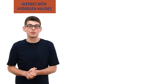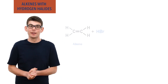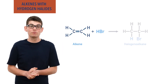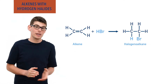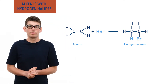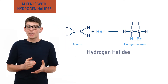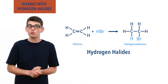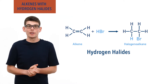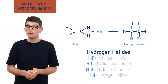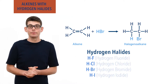When an alkene reacts with a hydrogen halide, a halogeno alkane, also called a halo alkane, is formed. A hydrogen halide is a molecule made up of a hydrogen atom bonded to a halogen atom — fluorine, chlorine, bromine, or iodine.